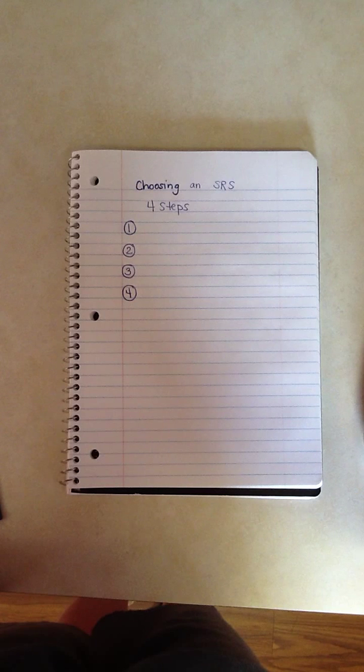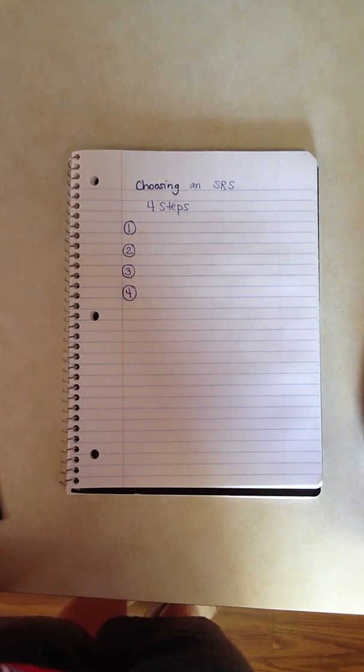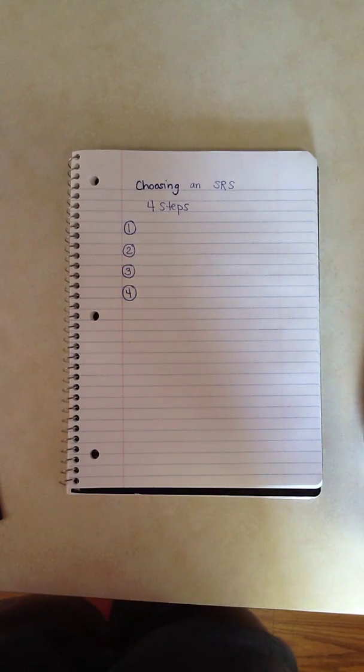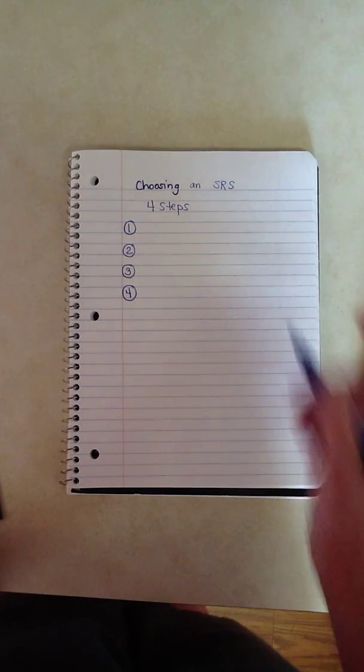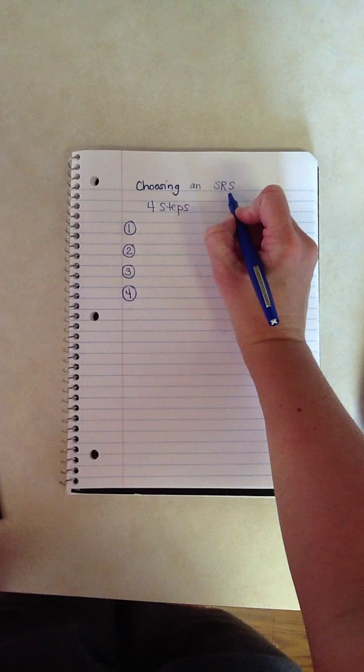Alright, here's your video for choosing a simple random sample. This might be a good video to watch before you actually simulate using a simple random sample, because these are the four steps you're going to need in order to do that. When you choose a simple random sample, you have to go through four steps. SRS meaning simple random sample.